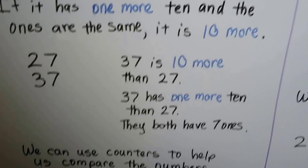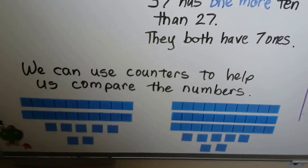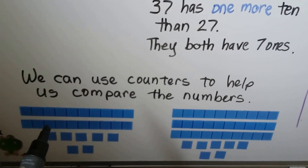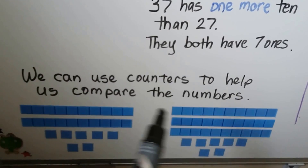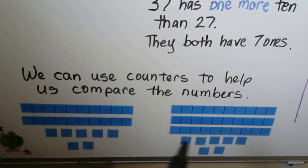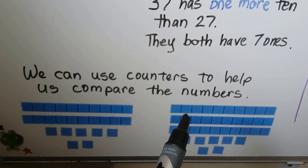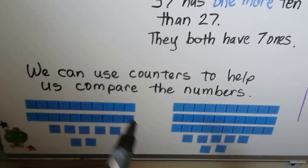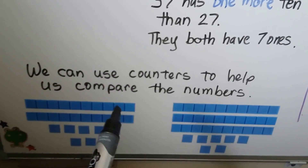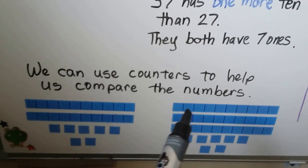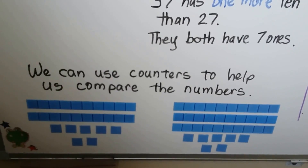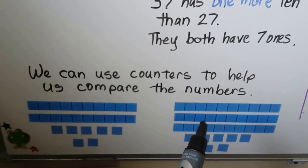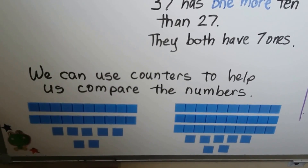We can use counters to help us compare numbers. Here we have 27 counters, and here we have 37 counters. This has 2 tens, this has 3 tens. They both have 7 ones. They're different by 1 ten — 1 rod of 10. This is 10 more, this is 10 less.